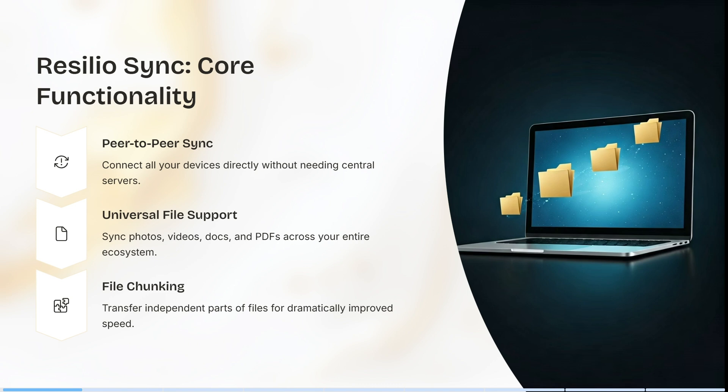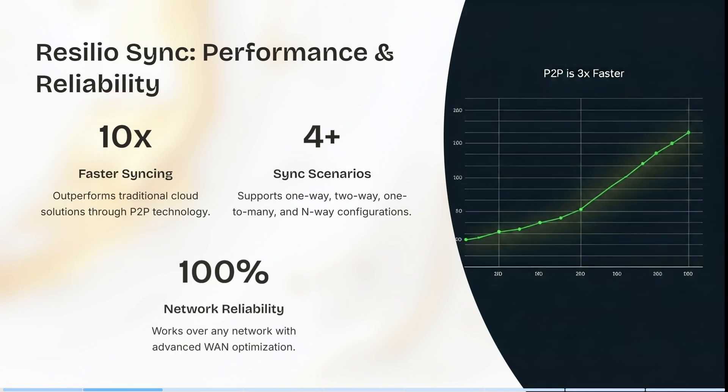You can transfer independent parts of files, dramatically improving your speed. Resilio also offers great performance and reliability — it's actually 10 times faster at syncing, and its output performance traditionally outperforms cloud solutions through its P2P technology.